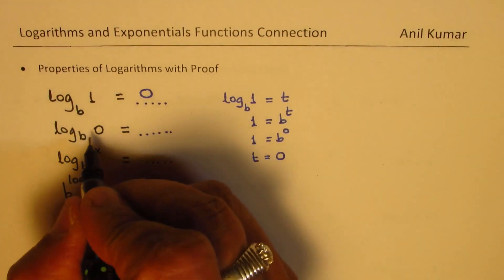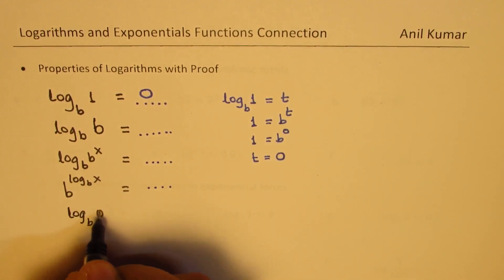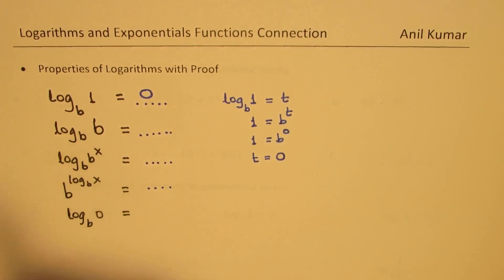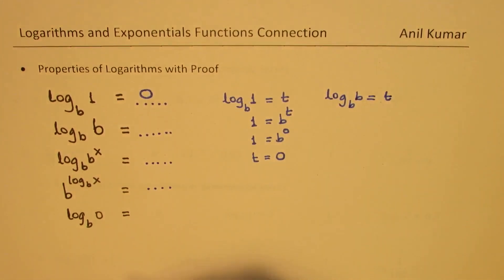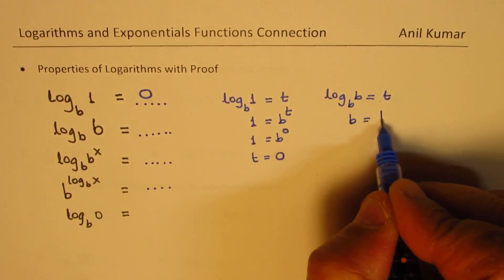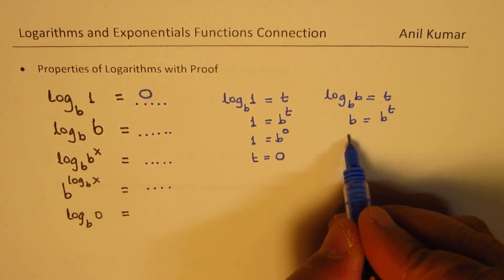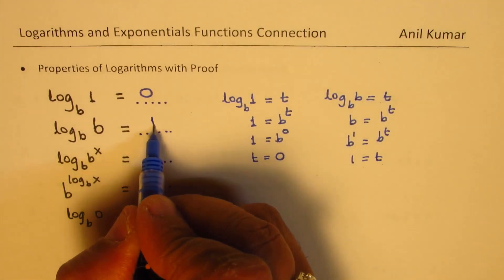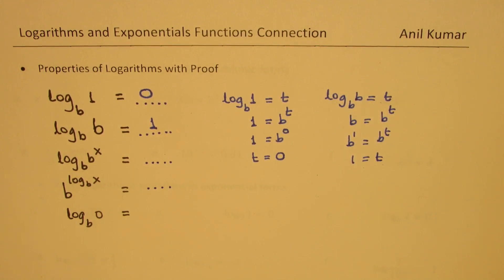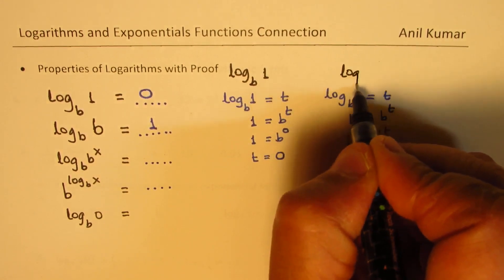Now the second one: log to the base b of b. We don't know what this is, so let it be t. Writing in exponential form: b equals b to the power of t. Comparing exponents, t is equal to 1. So log to the base b of b equals 1. We have now provided the proof for log to the base b of 1, which is 0, and log to the base b of b, which is 1.